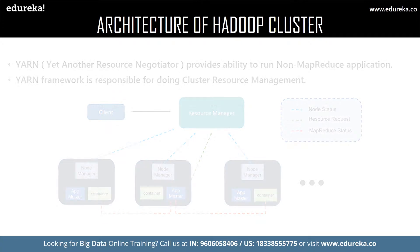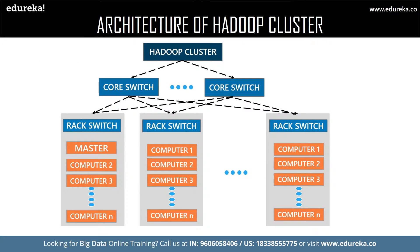Now let us have a look at the overview of the Hadoop cluster architecture, followed by the rack awareness algorithm. This is the architecture of Hadoop cluster, which consists of racks. Each rack consists of a set of computers, and one of the racks contains the master. These racks use co-switches to communicate with each other. Now let us move on to the rack awareness algorithm.